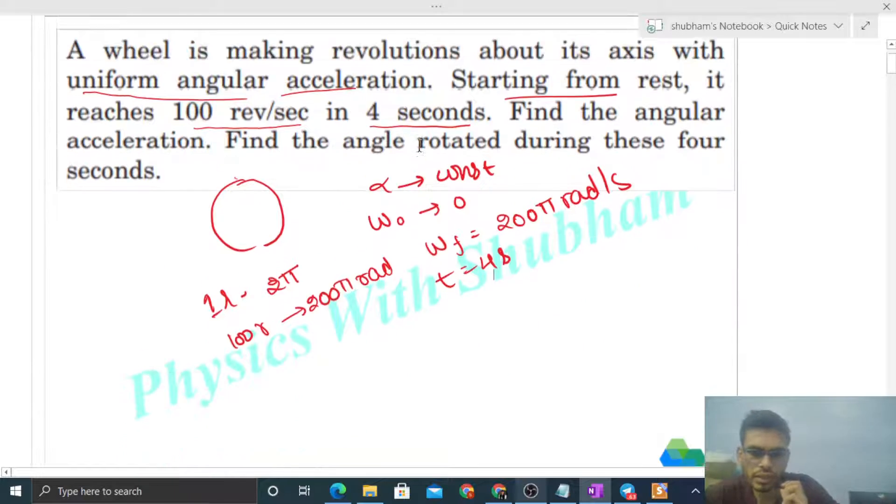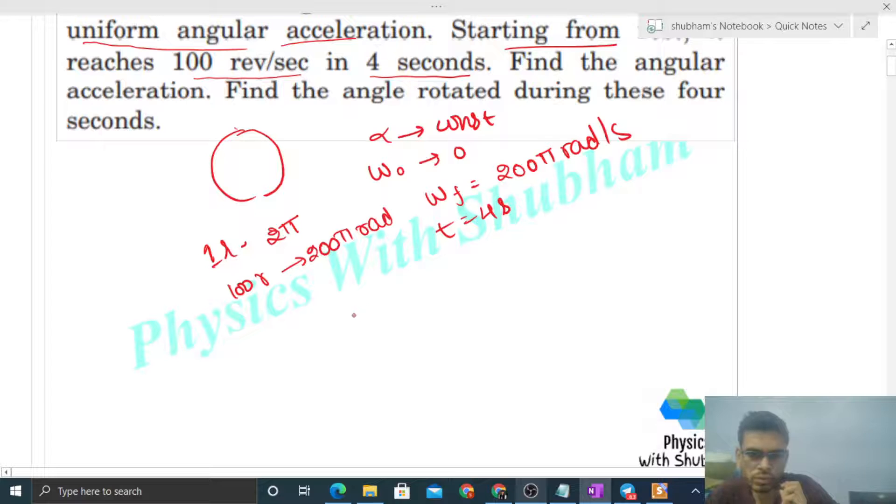First we have to find out angular acceleration. You can simply use omega_final equals omega_0 plus alpha times t. So omega_final is 200π and that equals initial omega zero plus alpha into 4 seconds. From here you will get alpha equals 50π radians per second squared, or you can divide it by 2π to get 25 revolutions per second squared.